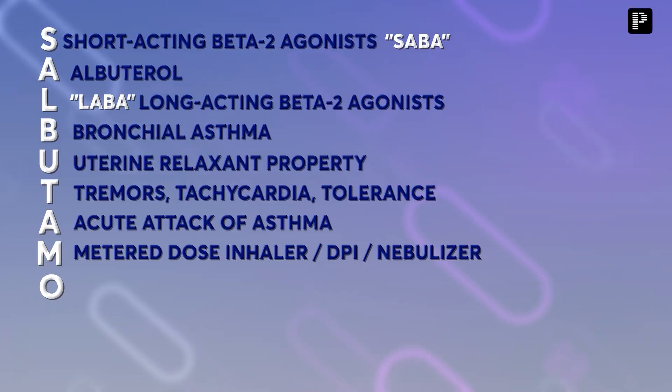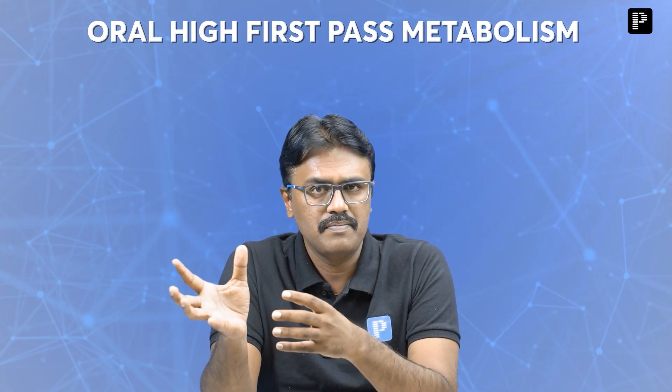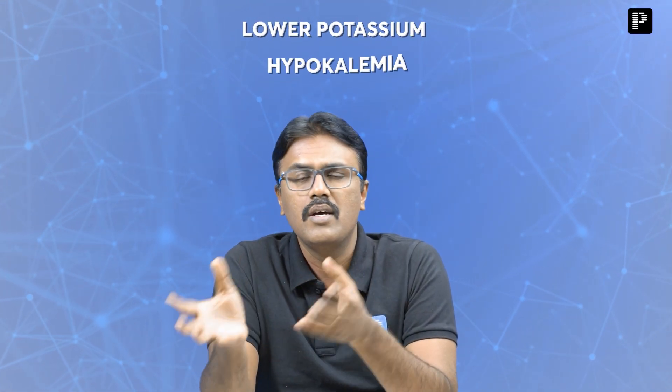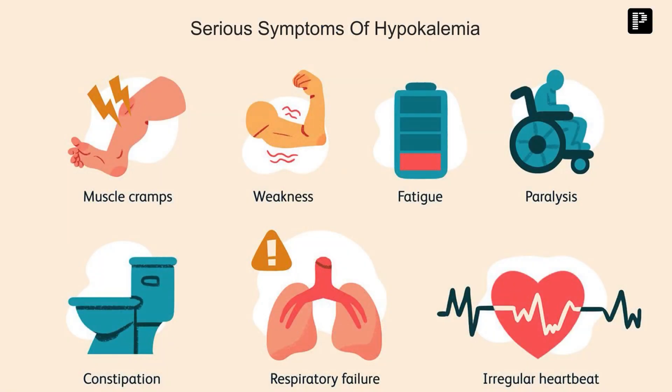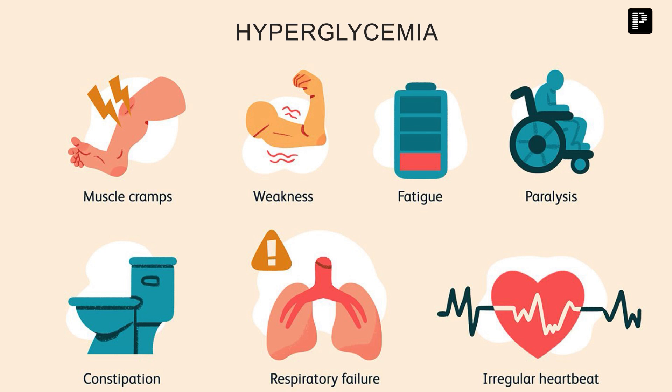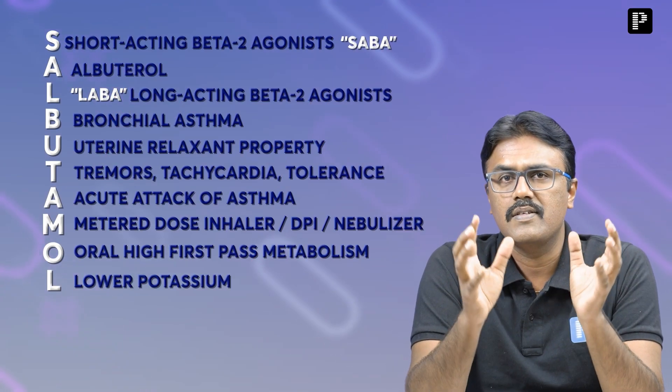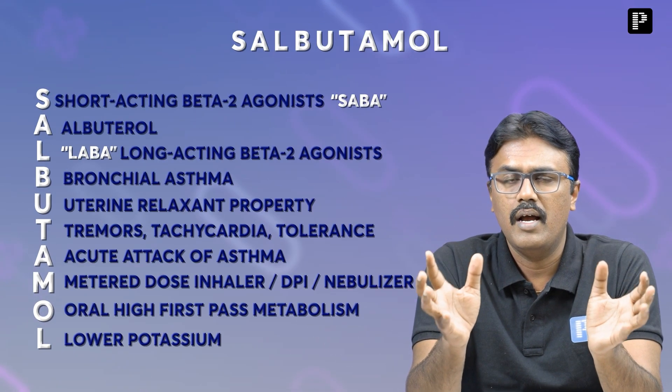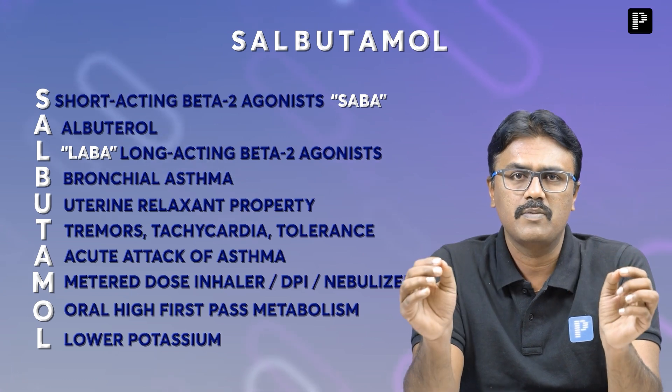The next letter is O. O stands for the fact that when salbutamol is given orally, it has very high first-pass metabolism. The last letter is L — salbutamol can lower potassium, causing hypokalemia. Not only that, it can also cause hyperglycemia, that is, an increase in blood glucose.